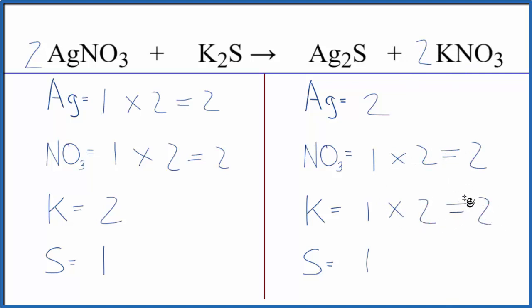This equation is balanced. So you can see the utility of counting these polyatomic ions as one thing if they're on both sides of the equation. With more complicated double displacement reactions, it's even much more important to do this.